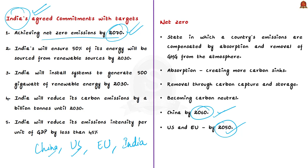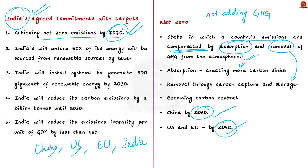Net zero refers to not adding to the amount of greenhouse gases in the atmosphere — all man-made greenhouse gas emissions must be removed through reduction measures. Net zero is a state in which a country's emissions are compensated by absorption and removal of greenhouse gases from the atmosphere. Absorption is done by creating carbon sinks such as forests, while removal requires future technologies like carbon capture and storage. Achieving net zero requires a sharp shift to clean energy sources. A country with net zero emissions is effectively carbon neutral.